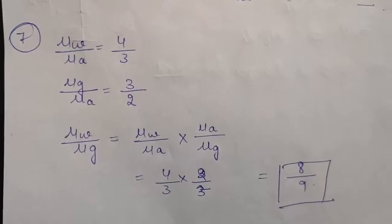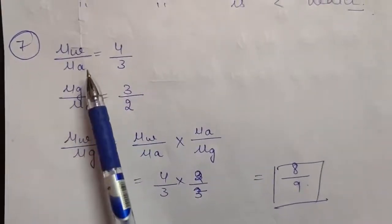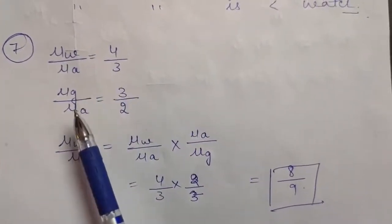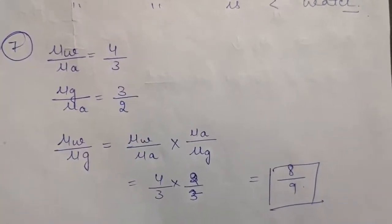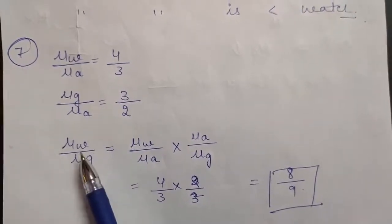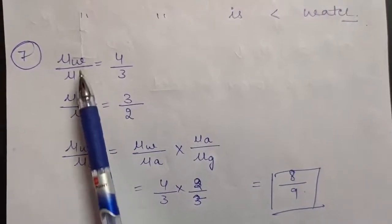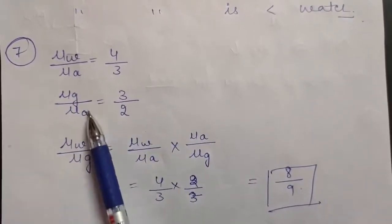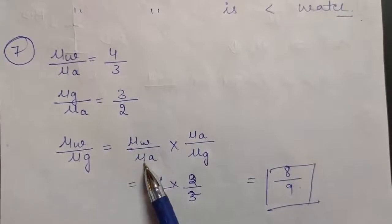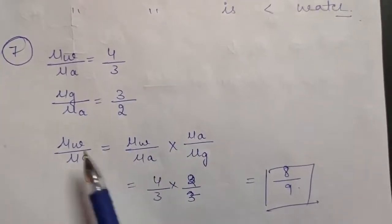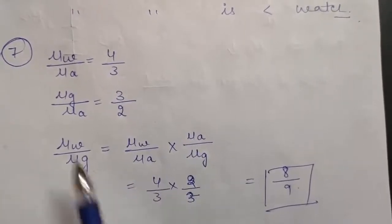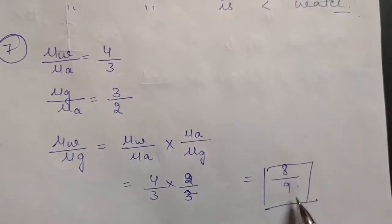In question number 7, the refractive index of water with respect to air (mu_w / mu_a) is given to be 4 by 3, and the refractive index of glass with respect to air is given to be 3 by 2. We have to calculate the refractive index of water with respect to glass. This equals (mu_w / mu_a) times (mu_a / mu_g), so mu_a cancels out, giving mu_w / mu_g = (4/3) times (2/3) = 8 by 9.